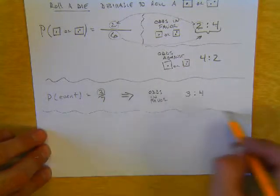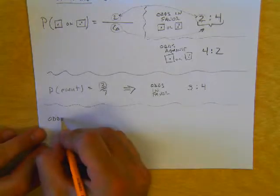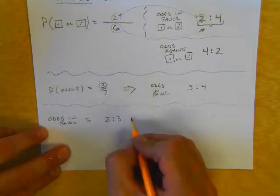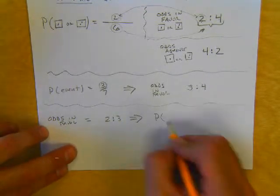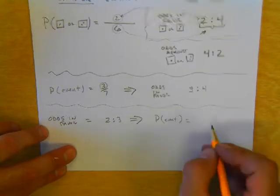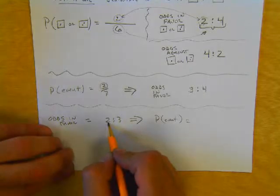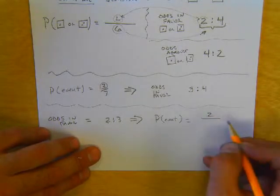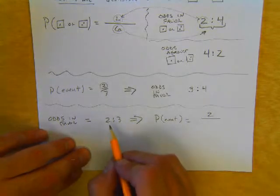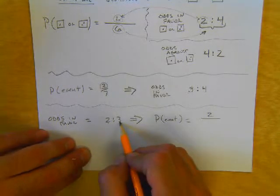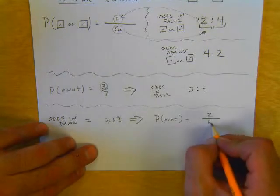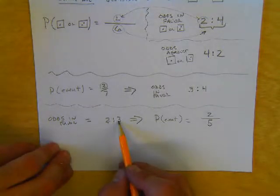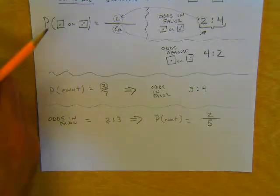Likewise, if you know the odds in favor are equal to two to three, you can figure out the probability. The first number is the favorable outcomes, which is also the numerator of the probability. The favorable and unfavorable outcomes added together give the total number of outcomes. So if the odds in favor are two to three, the probability of that same event happening would be two over five.